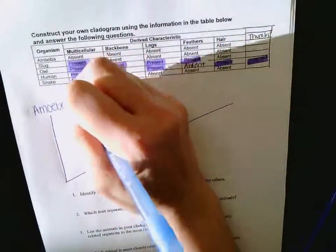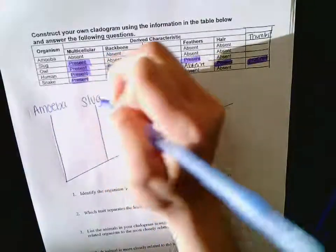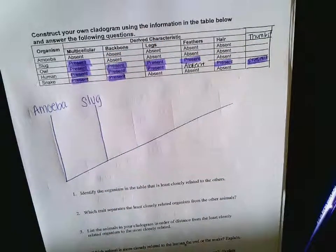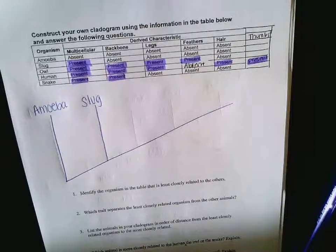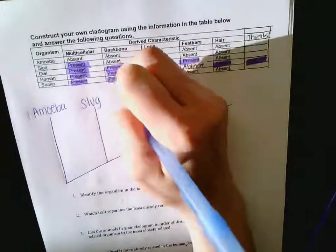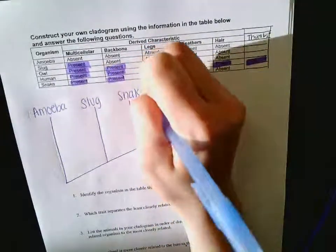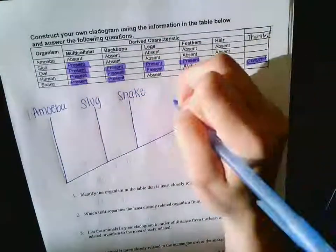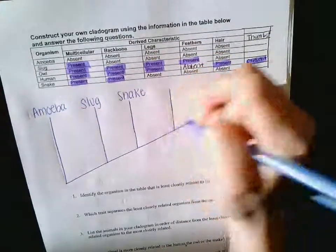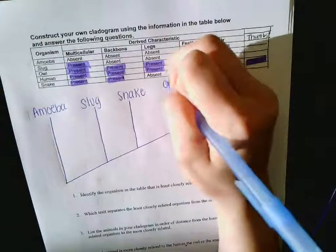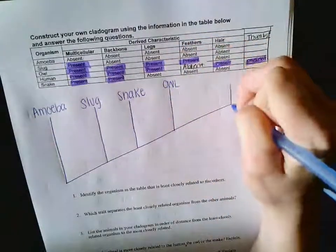Exactly right. What would come after the slug? The snake, yes. Snake. What would come after the snake? The owl, and then it would be human.